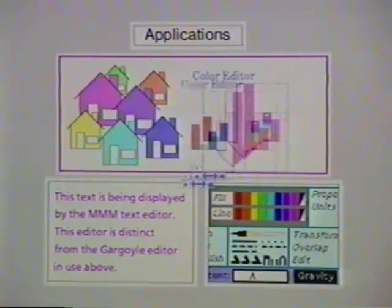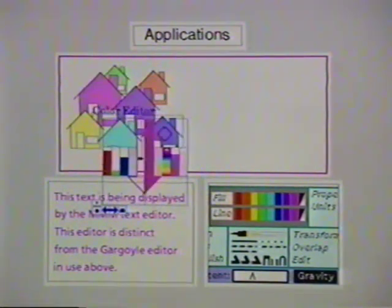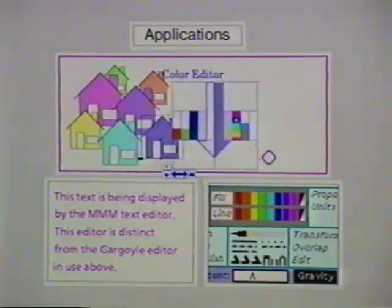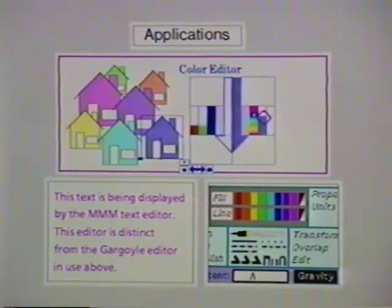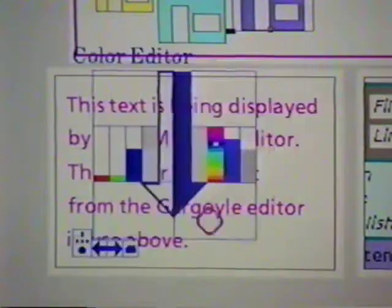Some tools work over a single application, while others work over multiple applications. Our color editing tool can pick up a color in this graphics window, modify it, and apply the resulting color to a word in this text editor.